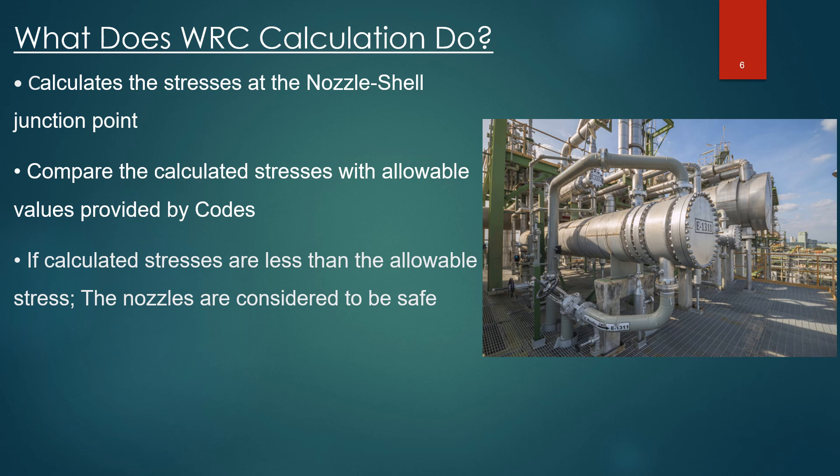What does WRC calculation actually do? It calculates the stresses at the nozzle-shell junction points and then compares those calculated stresses with the allowable values provided by codes or bulletins. If the calculated stresses are less than the allowable stress, the nozzles are considered safe and acceptable. This is the main function performed by both piping stress engineers and mechanical static equipment engineers.